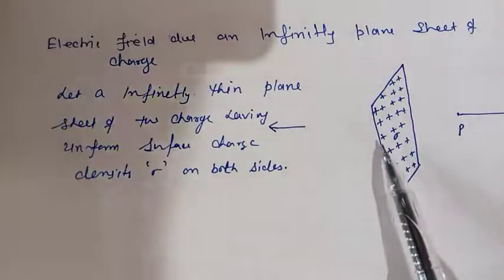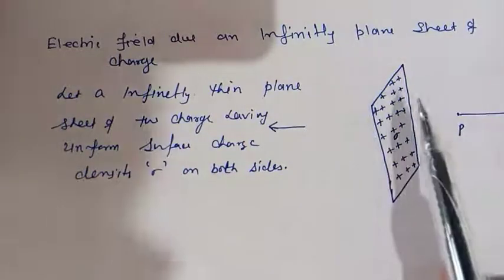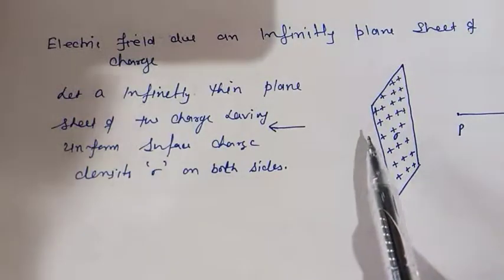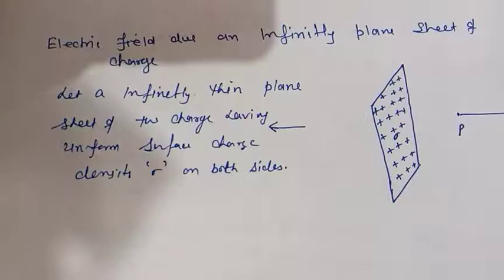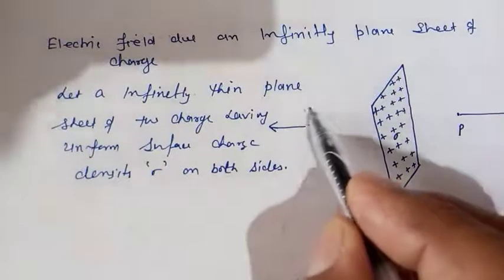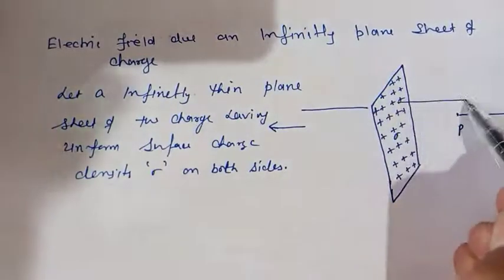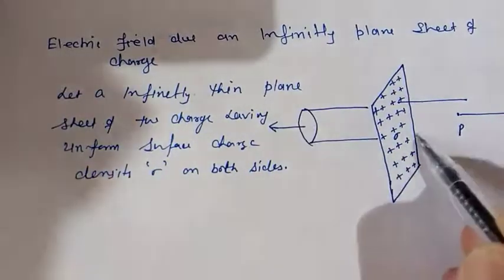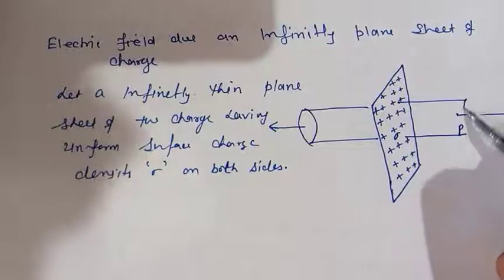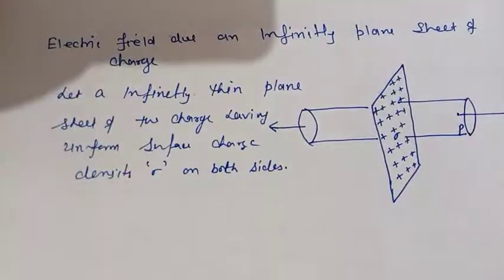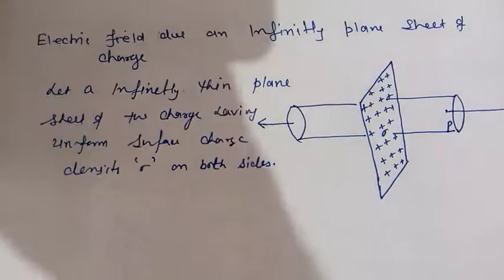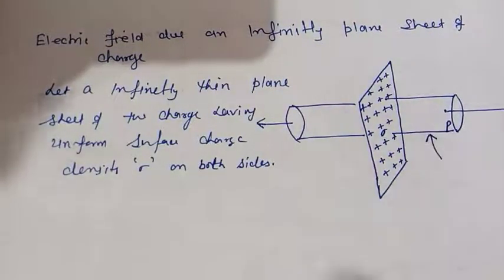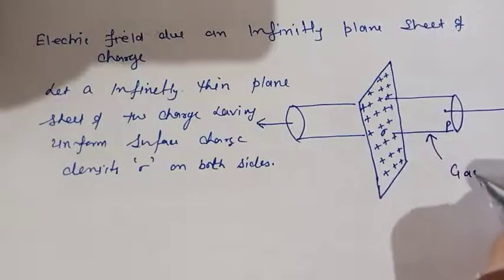To find the electric field due to this infinitely plane sheet of charge, we have to take a Gaussian surface. The best possible Gaussian surface here will be a cylinder — a cylindrical surface like this one. So this cylindrical surface is our Gaussian surface.